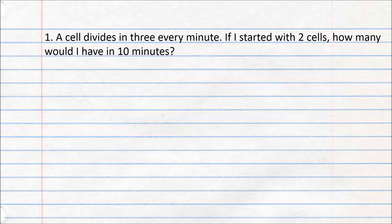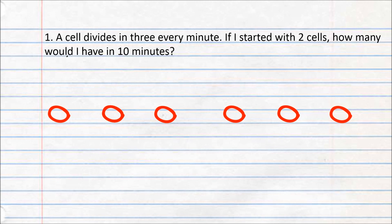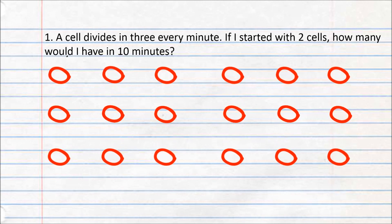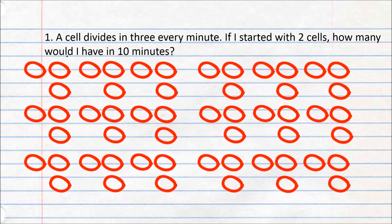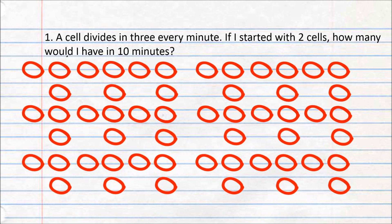A cell divides into three each minute. If I started with two cells, how many will I have in 10 minutes? Let's start this from scratch and actually draw it out. We are starting with two cells at the beginning. Since each cell divides into three every minute, we'll have six cells after the first minute, followed by 18 in the next minute, and then 54 by the third minute. And I can't be bothered counting anymore.